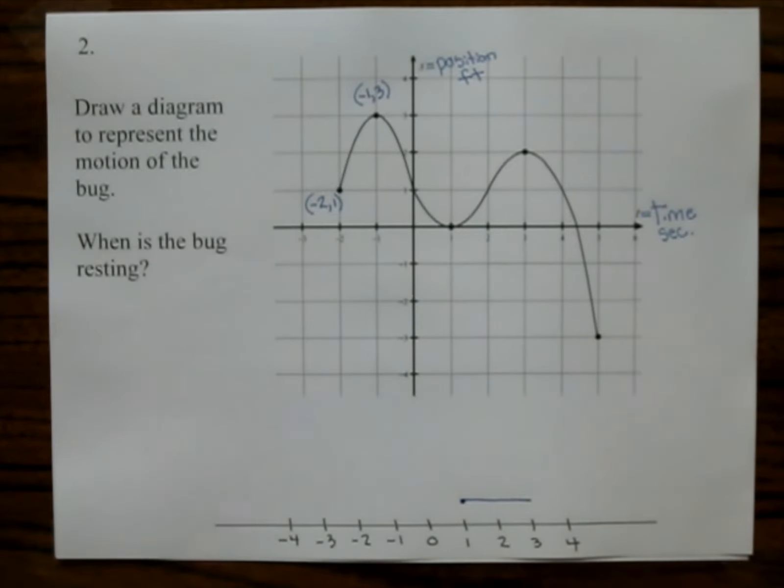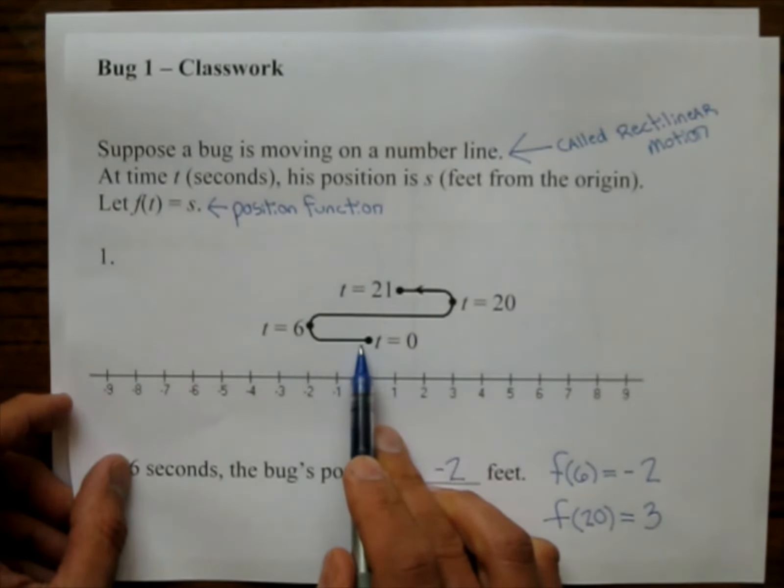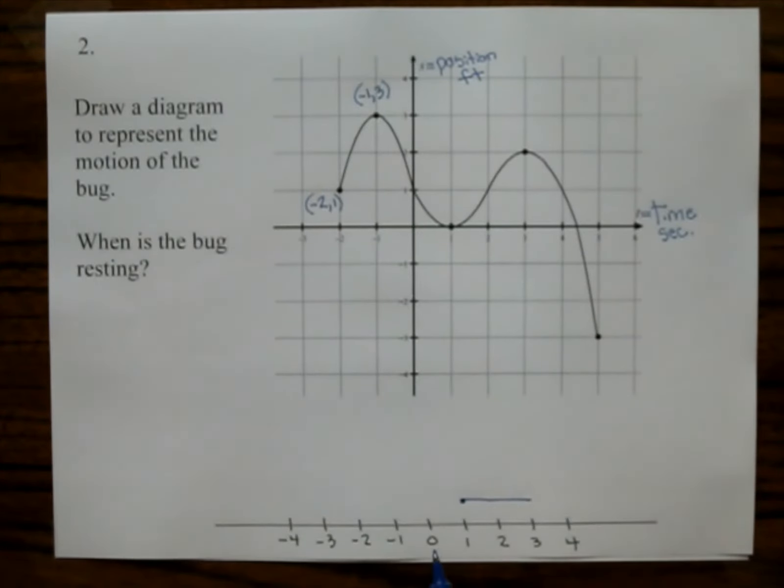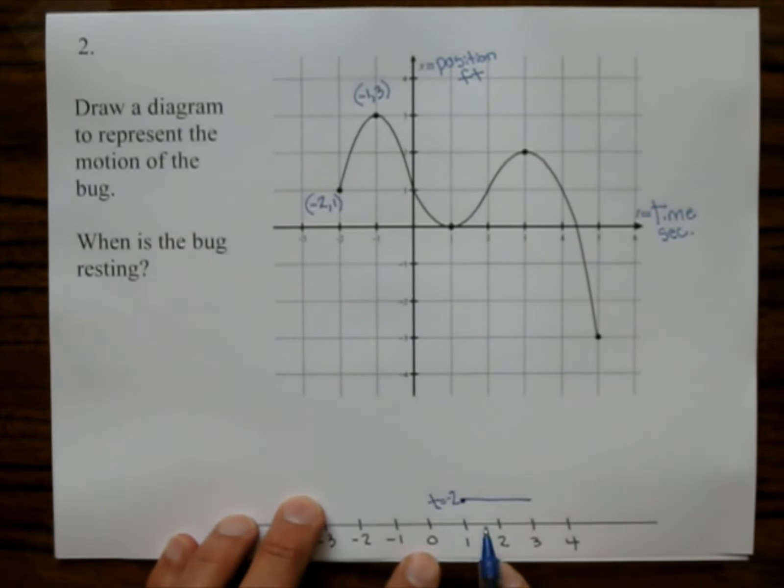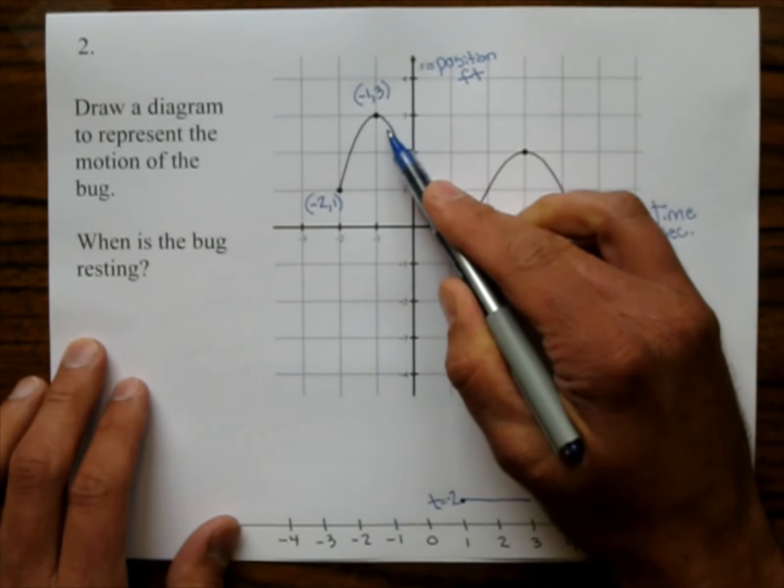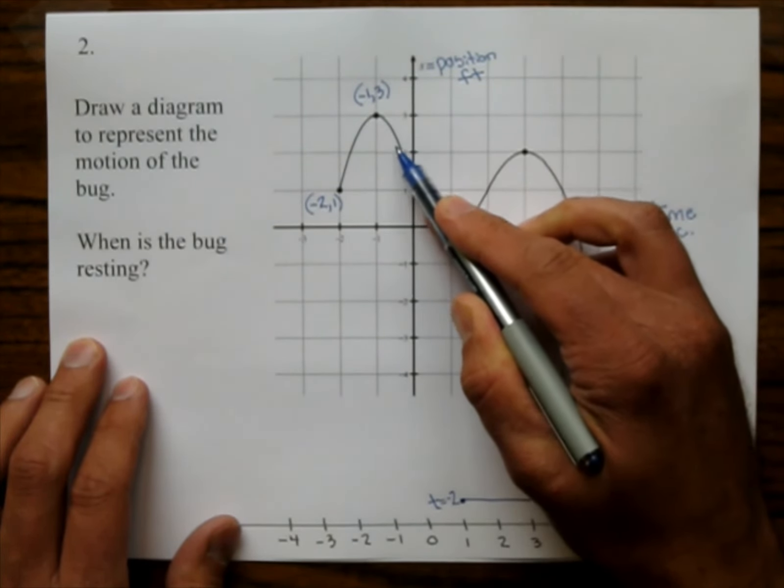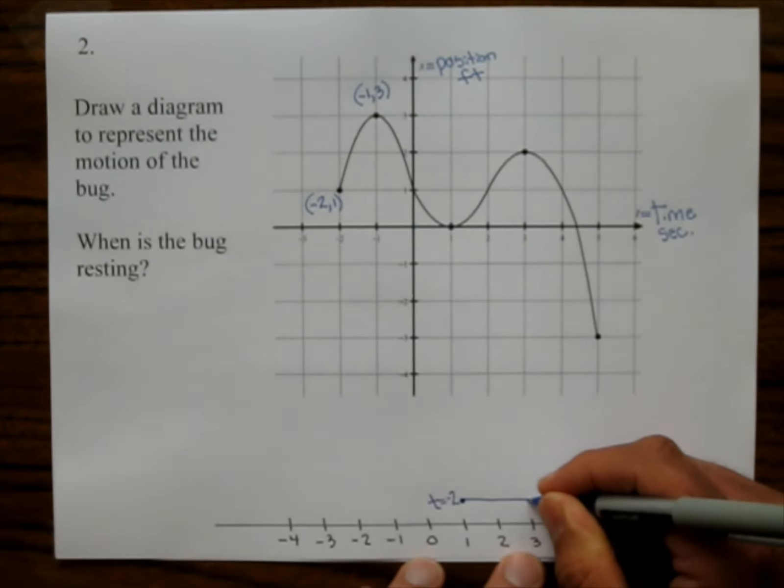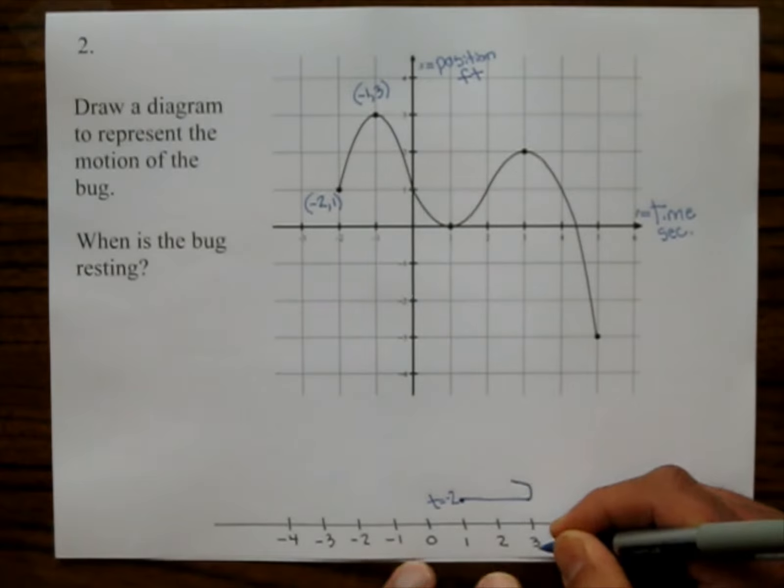So you might have remembered on this one, the bug started at time 0 and started traveling to the left. On this one, the bug is starting at time, and we'll put the time, time negative 2, and the bug is traveling to the right. Well, now what happens? Now the graph starts going down, which means the positions are getting less than 3, which means there's a turnaround here. So the bug is turning around at position 3.